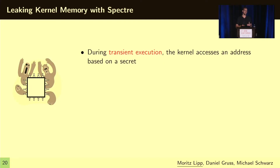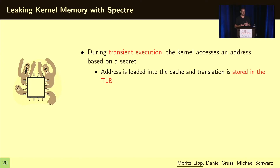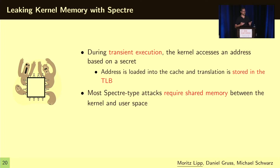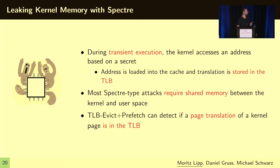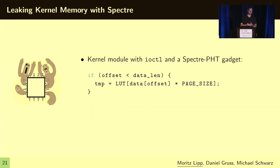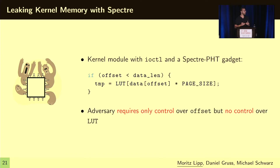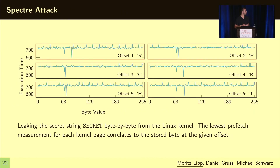In addition, the side channel can be used in a Spectre scenario. During transient execution, the kernel accesses an address based on a secret, and this address is loaded into the cache and its translation stored in the TLB. Most Spectre-type attacks require shared memory between the kernel and user space. With our TLB Evict+Prefetch primitive, we can detect if a page translation of the kernel — which we otherwise cannot access — is stored in the TLB. Using a kernel module with a Spectre PHD gadget, we only need the variable offset and no control over the lookup table. This allows us to leak a secret string byte by byte from within the Linux kernel transiently.